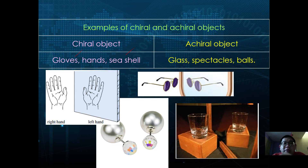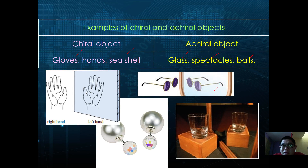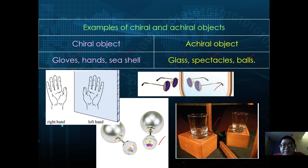Examples of non-chiral objects are spectacles and balls. When these are reflected and overlapped with the object, they are superimposable, and therefore are non-chiral objects.